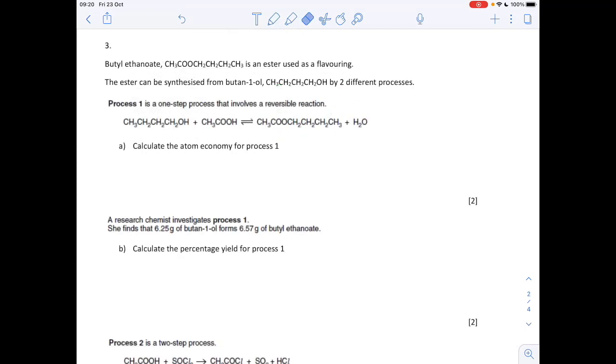Question three is all about atom economy and percentage yield. So we've got to calculate the atom economy for process one. The formula we use is the MR of the desired product divided by the MR of all products times 100. You could divide by the MR of all of the reactants there. There's two ways to do this. You still get the same answer. So we'll put the numbers in. We've got 116 is the MR for the desired over 134 is the MR of all of the products times 100, 86.6%.